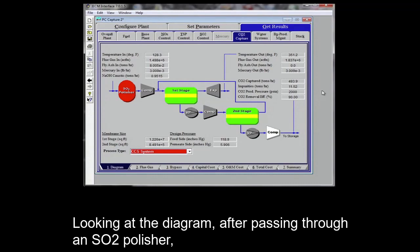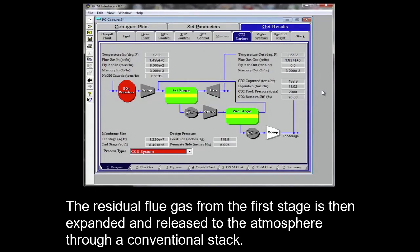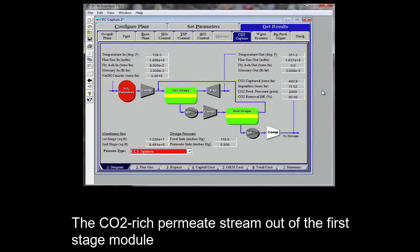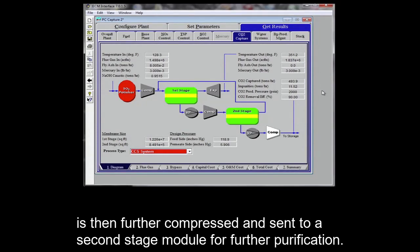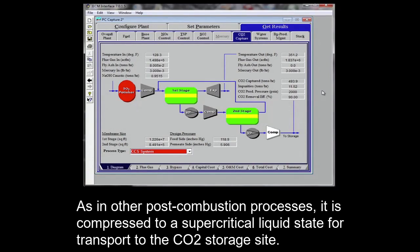Looking at the diagram, after passing through an SO2 polisher, flue gas is compressed to a high pressure before entering the first membrane stage. The residual flue gas from the first stage is then expanded and released to the atmosphere through a conventional stack. The CO2 rich permeate stream out of the first stage module is then further compressed and sent to a second stage module for further purification. The permeate stream from the second stage membrane module is the final stream of captured CO2. As in other post-combustion processes, it is compressed to a supercritical liquid state for transport to the CO2 storage site.